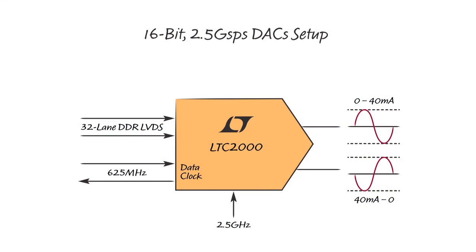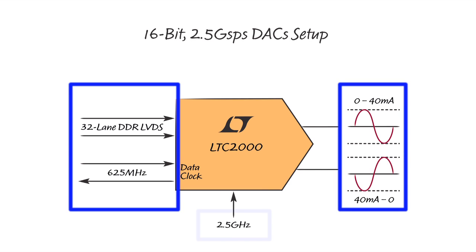Every DAC requires four things: power, input data, an output network, and a clock.